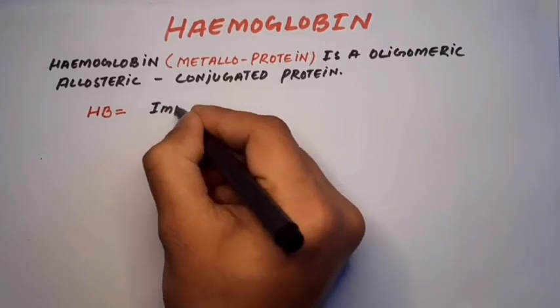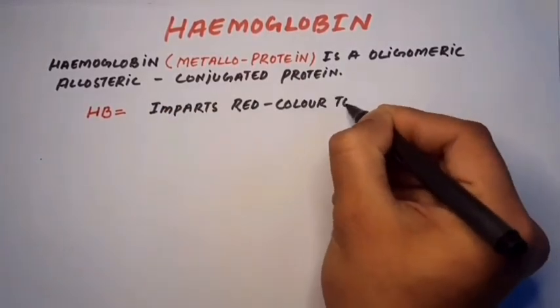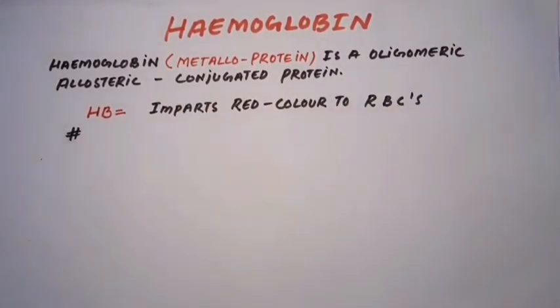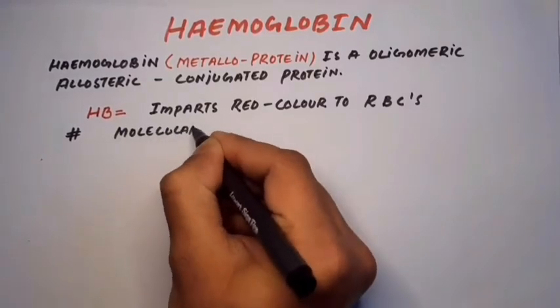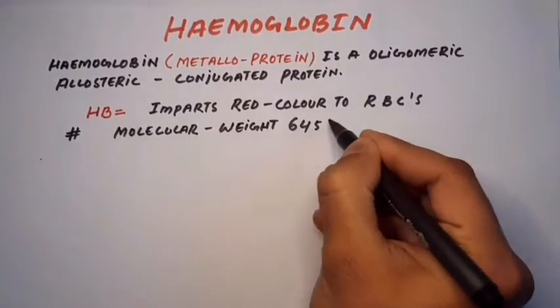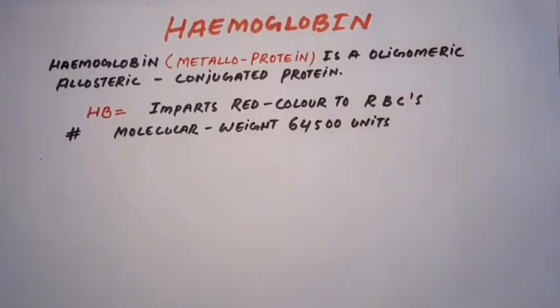Haemoglobin imparts a red color to the RBCs. The molecular weight of haemoglobin is 64,500 daltons.